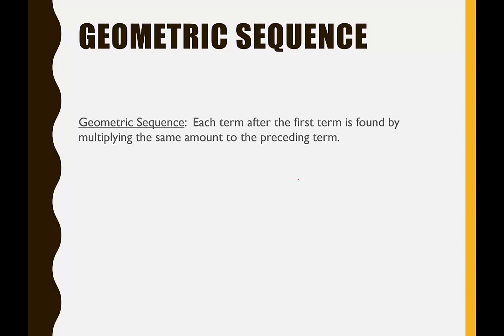In a geometric sequence, each term after the first term is found by multiplying the same amount to the preceding term. And again, division is a form of multiplication. Division is equivalent to multiplying by the reciprocal.